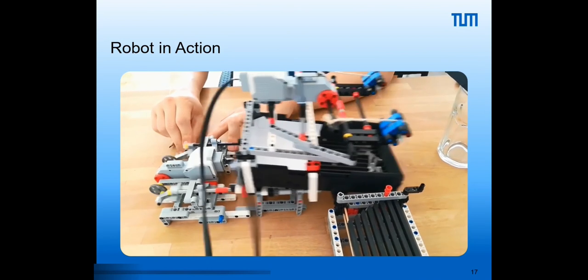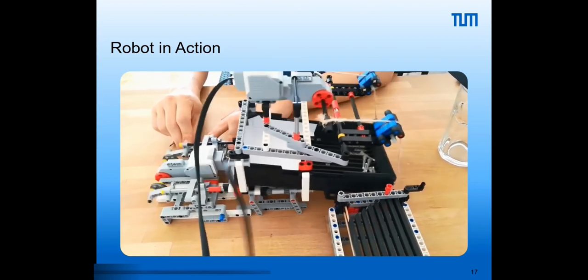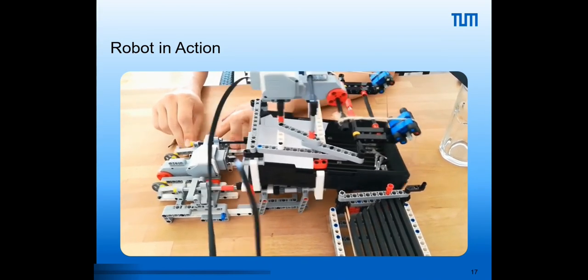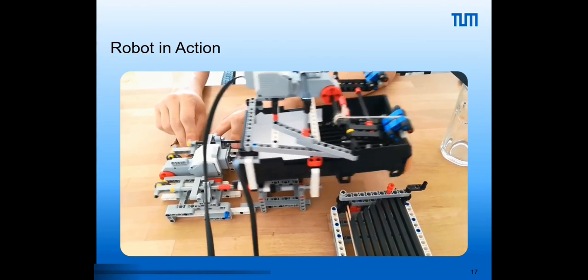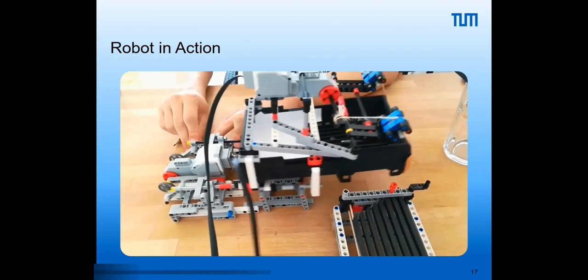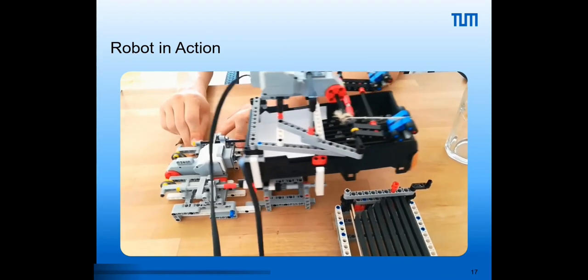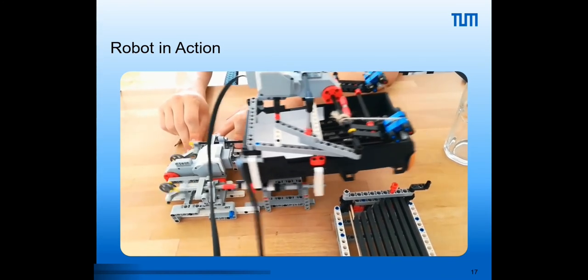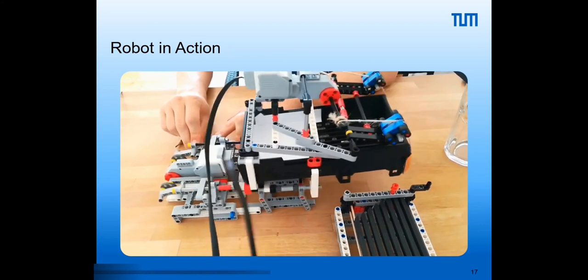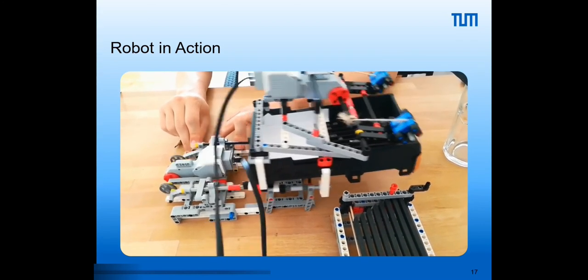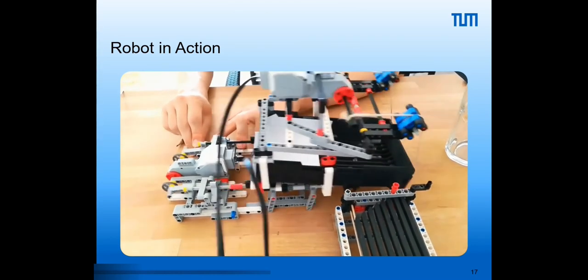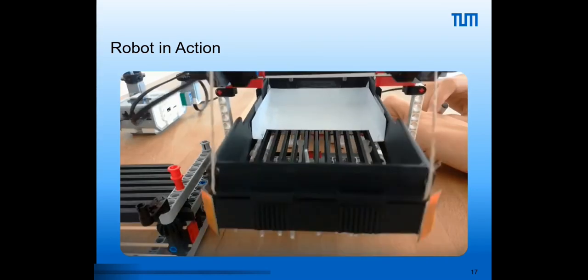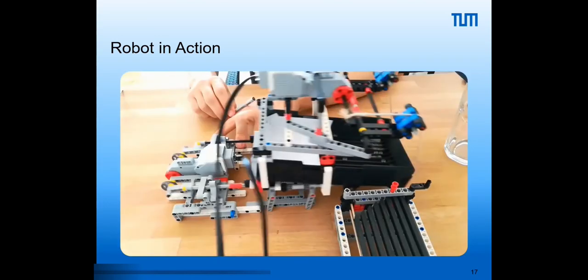Here you can see a more elaborate robot that our students produced. Basically it's a pipette tip sorting device and it has a lot of different movements. It has a linear movement, an up-down movement and also the insertion of the comb. These three movements needed to be combined in order to have a successful pipette sorting. As you can see here the robot works relatively well.